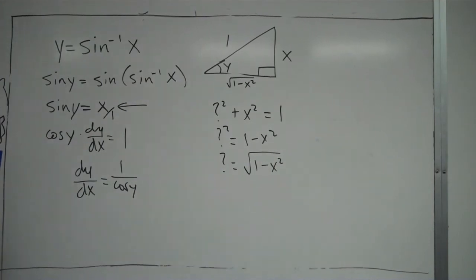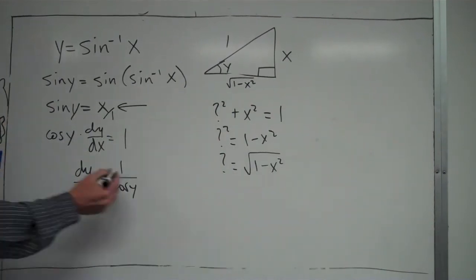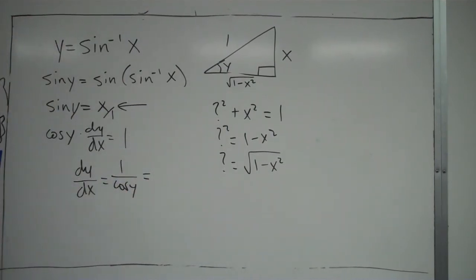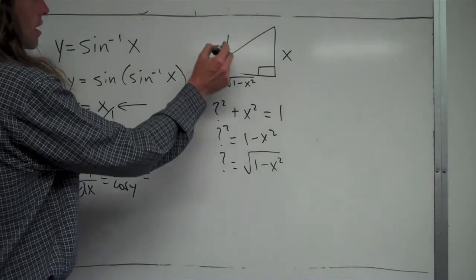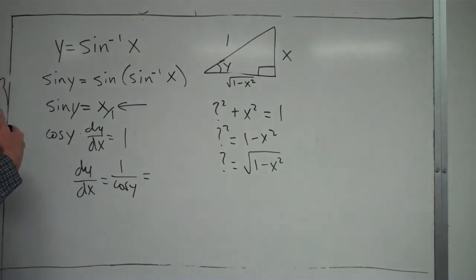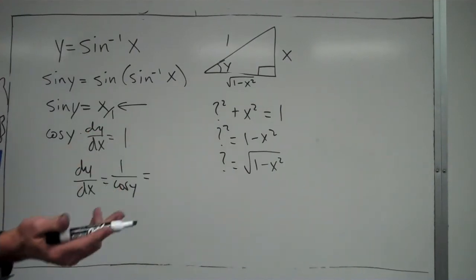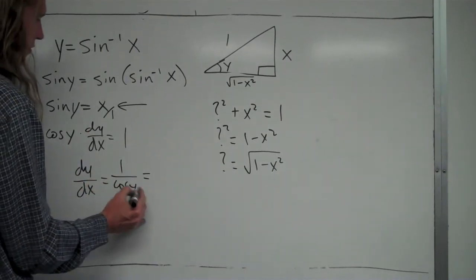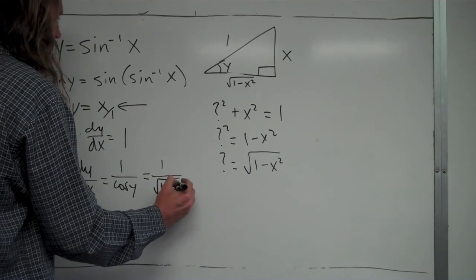So I can go back, and let's just go ahead and put in what I have for cosine here. Cosine of y equals adjacent over hypotenuse. So cosine of y is just equal to √(1-x²) over 1, or just √(1-x²). So instead of writing cosine y, I'm going to write √(1-x²).